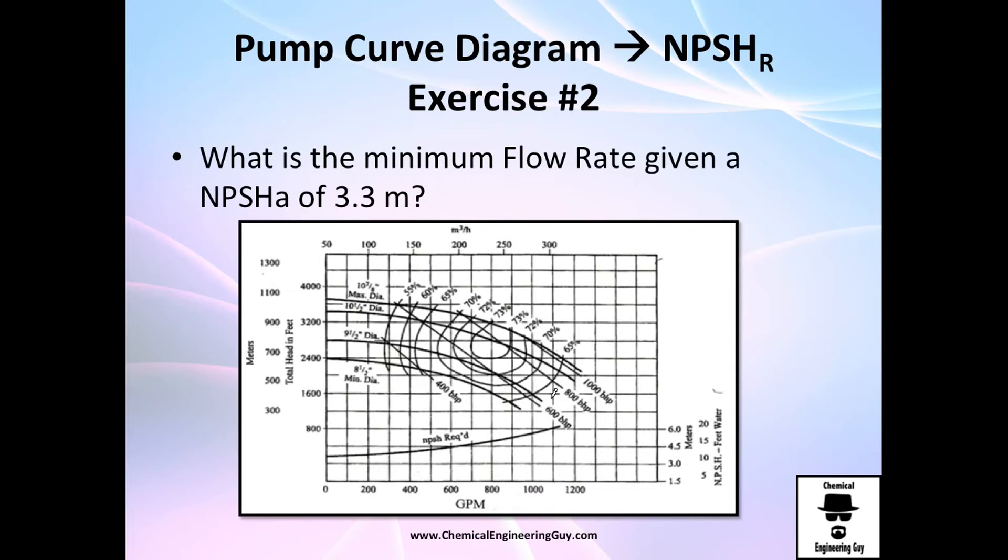This one is the interesting one. They ask you what is the minimum flow rate, minimum Q, given that my NPSH available is about 3.3 meters. I have my pump and I calculated the pressure right here in this section. I know the vapor pressure of my fluid and I calculated my NPSH to be 3.3.